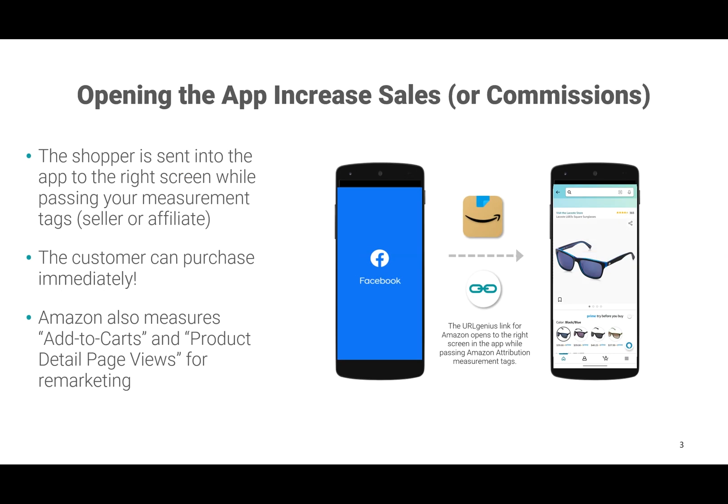URLgenius links will open the app which increases sales or commissions. Your shopper is sent into the Amazon app to the right screen while passing your measurement tags, whether those tags are for a seller or an affiliate. Your customer can purchase the product immediately.